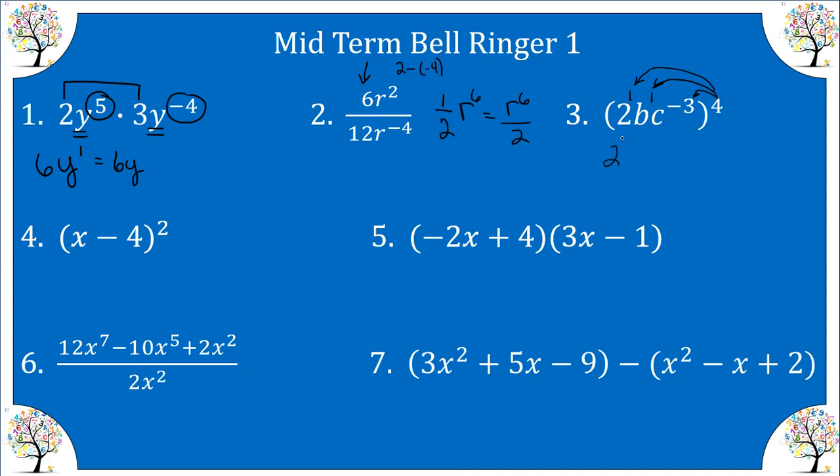So we get two to the fourth, B to the fourth, and C to the negative 12. Let's evaluate two to the fourth. That's 16 times B to the fourth, and let's reciprocate C so that we have a positive 12 exponent.